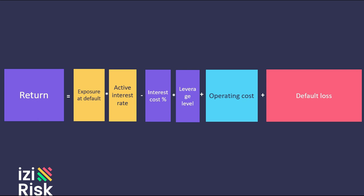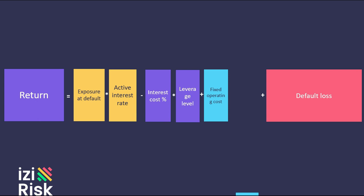The operating cost consists of those management costs required to place, maintain, collect, manage, and settle credit operations. This operating cost can be divided into two components: the fixed cost, which remains constant regardless of the number of operations in the credit portfolio, and the variable fraction, which depends on the amount. Both parts are added at the level of each operation to calculate the operating cost assigned per operation.